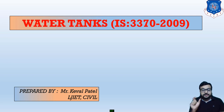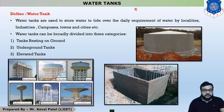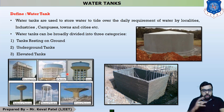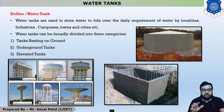2009 is the year in which this code was published. In this chapter, we are discussing about the first theory which is the types of water tank. There are three types of water tank based on their locations. The first one is underground water tank, whose shape is generally rectangle or circular. The second one is resting on ground water tank, whose shape is generally rectangle or square.